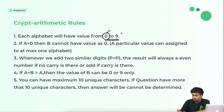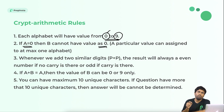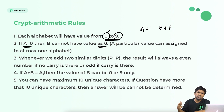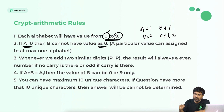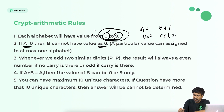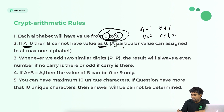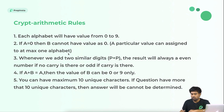Rule 1: Each alphabet will have a value from zero to nine. Every alphabet needs to be assigned a single digit — you can't assign a two-digit value to an alphabet. Rule 2: Two alphabets cannot have the same value. For example, if A equals one, then B cannot be one — it can be zero, two, three, up to nine, but not one.